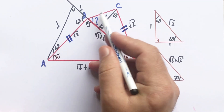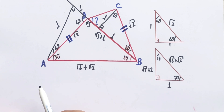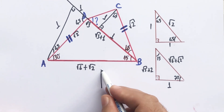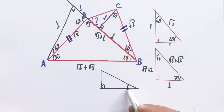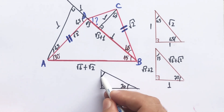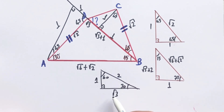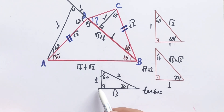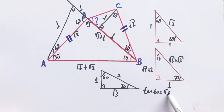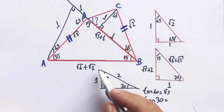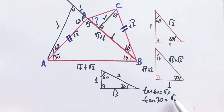If you notice, in this triangle — let's look here — we know that if there is one unit across the 30 degrees, the hypotenuse must be two units and across the 60 degrees must be root three. Therefore, tangent 60 degrees equals root three and tangent 30 degrees equals one over root three.